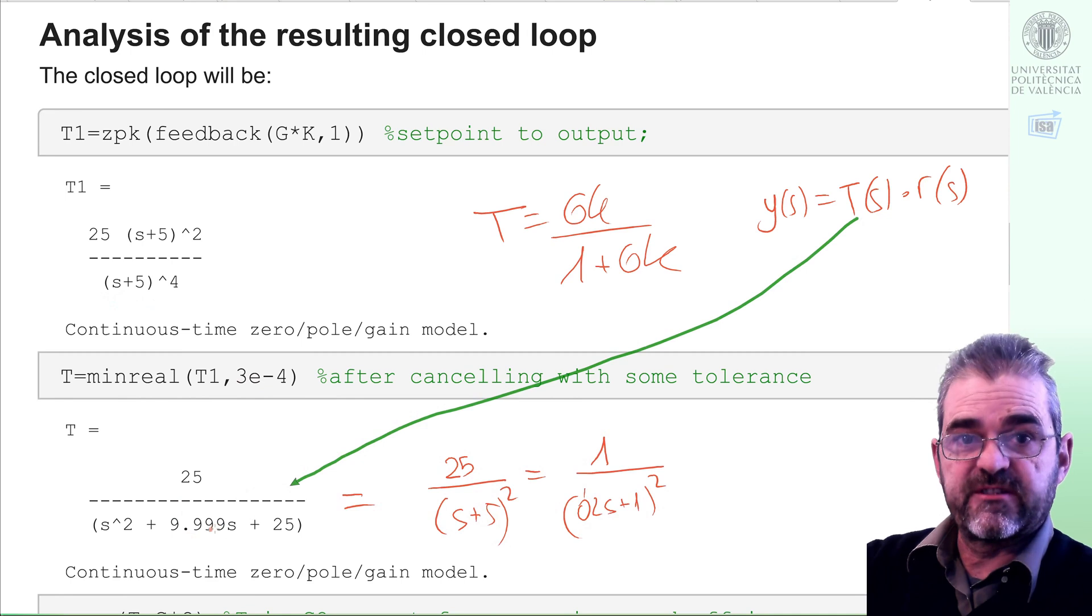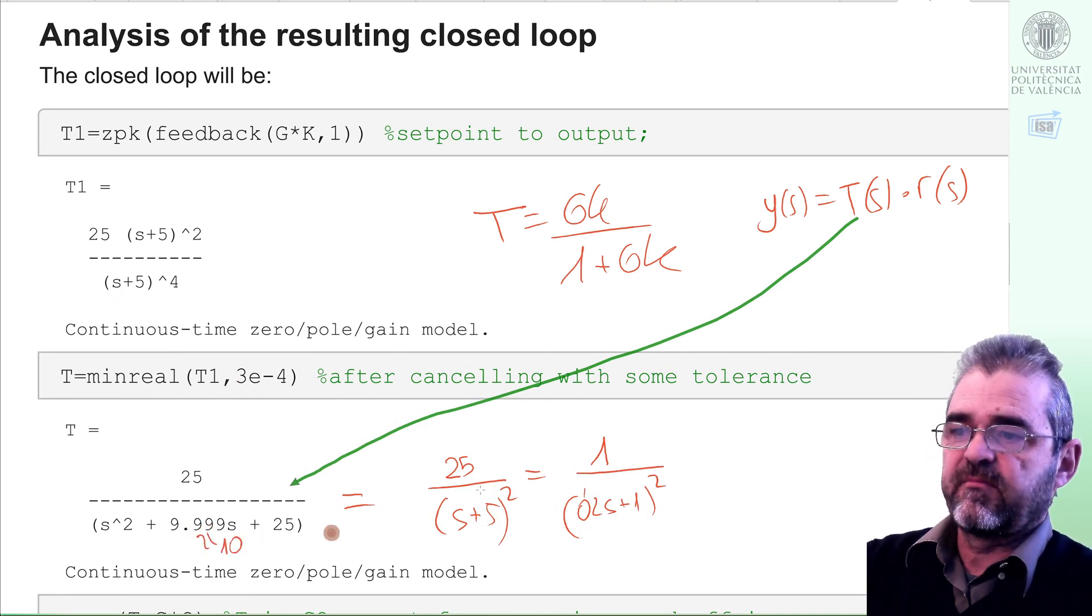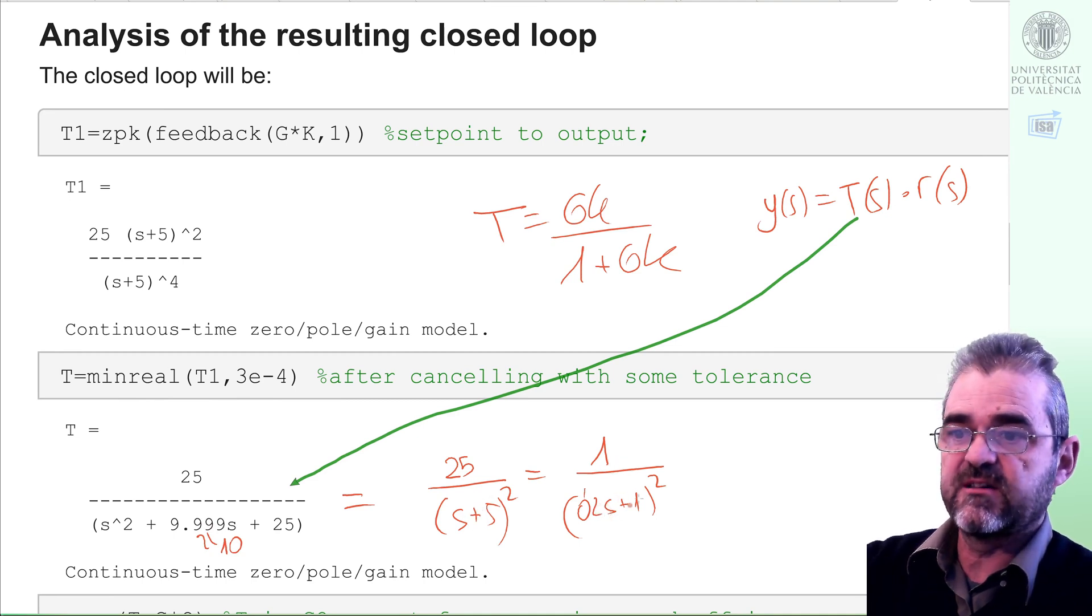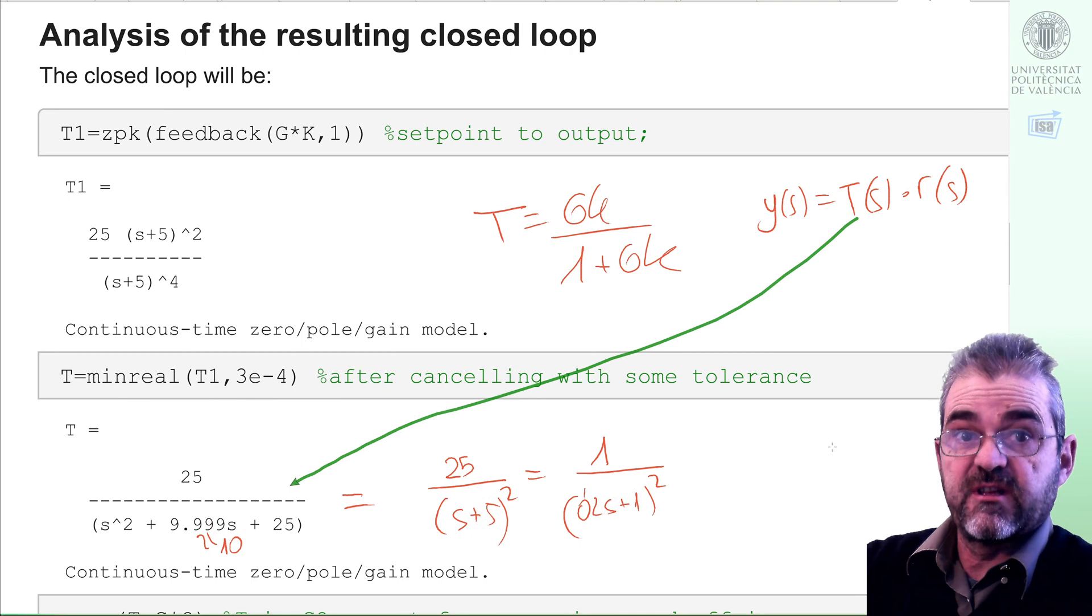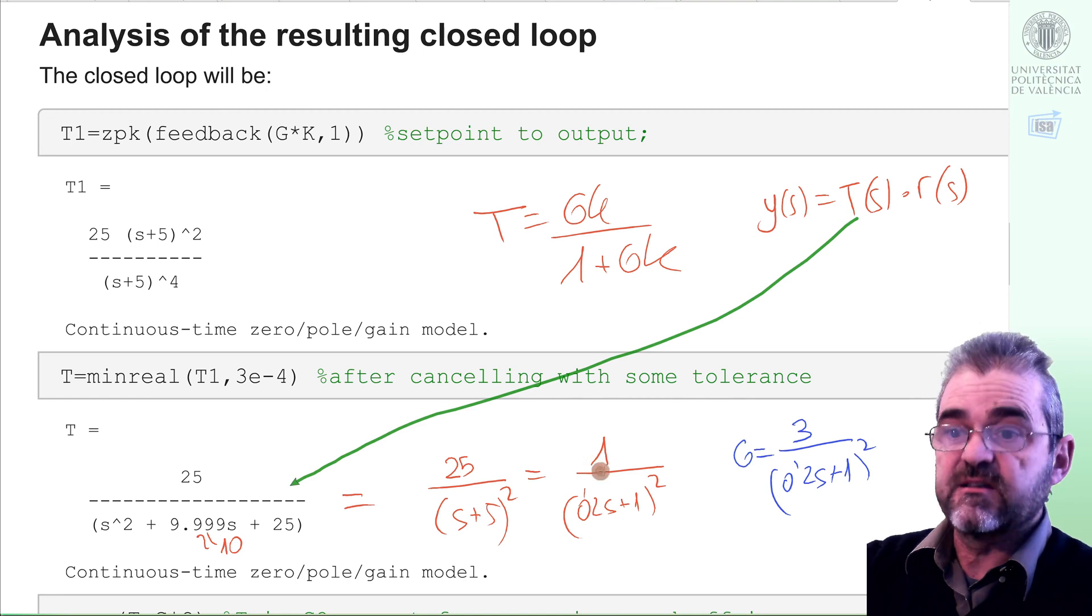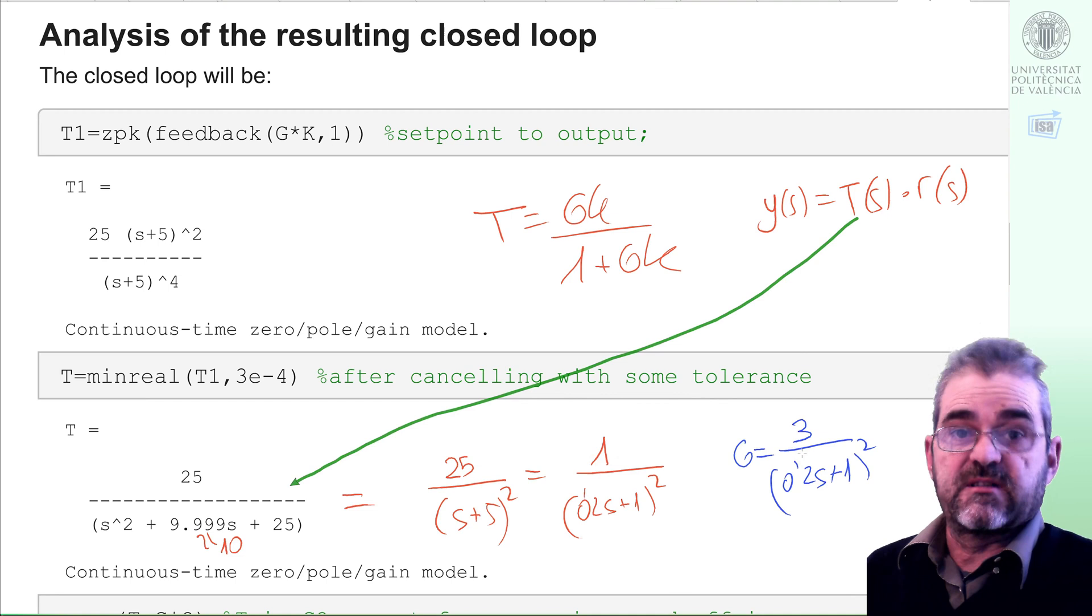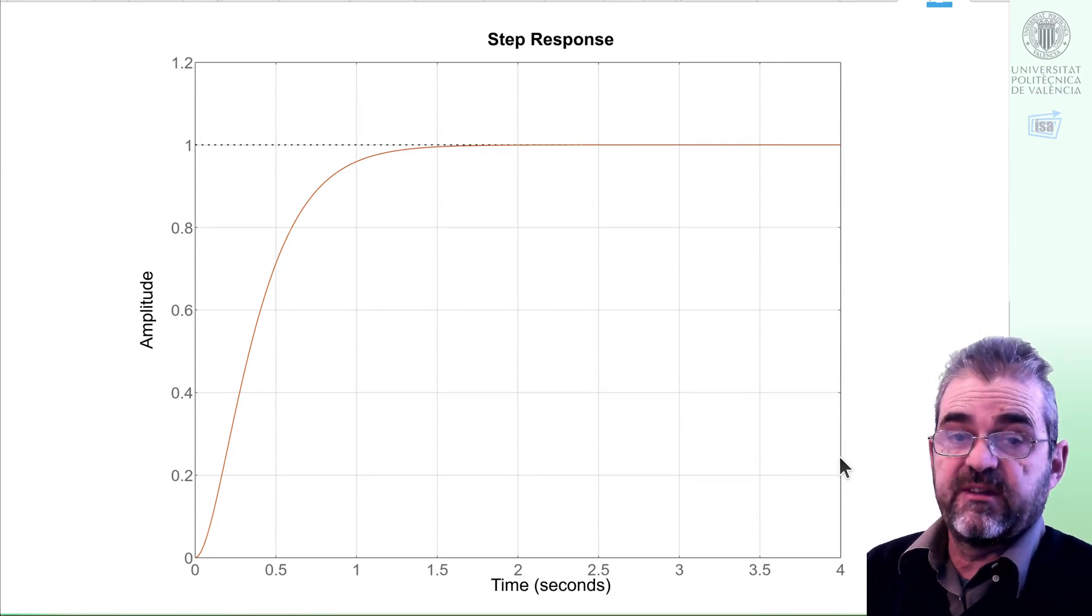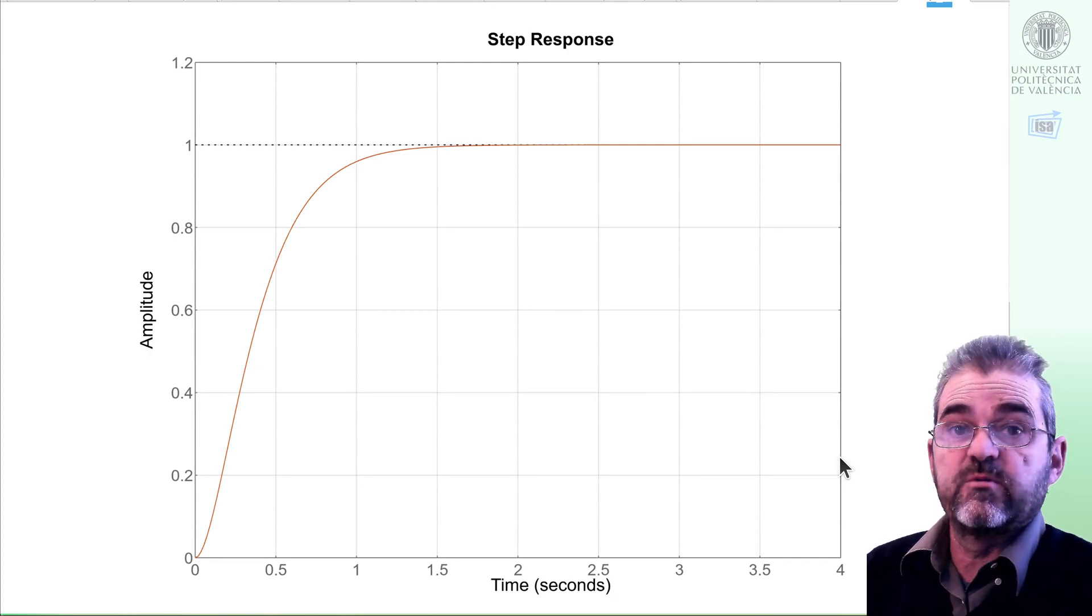So if I get MATLAB to cancel with 0.0003 tolerance, then it cancels these poles and gets this T, which apart from roundoff stuff—this is 10—it is this transfer function divided by 25 numerator and denominator. I get this one, and it's just the same one as the process but with unit gain instead of gain 3. So this is what we wished—a setpoint response with the same dynamics as the plant but unit gain. So if we plot the closed loop response and the open loop control divided by 3, we get the same, and it's the 1.2 settling time we were happy with from the start.